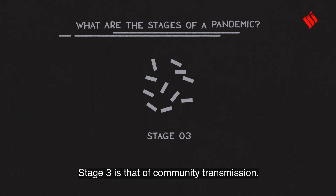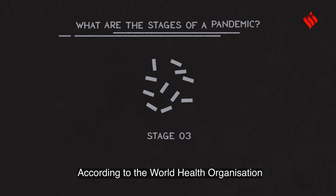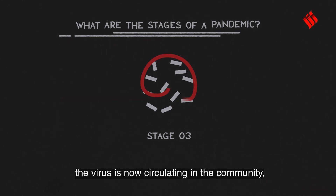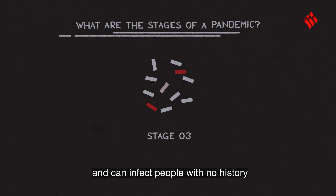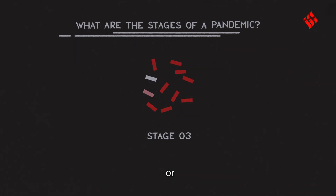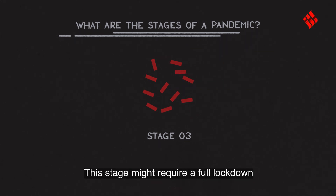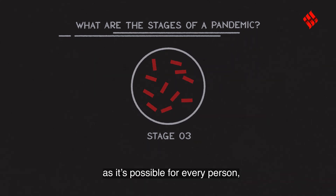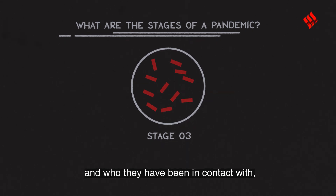Stage 3 is that of community transmission. According to the World Health Organization, the virus is now circulating in the community and can infect people with no history either of travel to affected areas or of contact with an infected person. This stage might require a full lockdown, as it's possible for every person, regardless of where they are from and who they have been in contact with, to spread the disease.